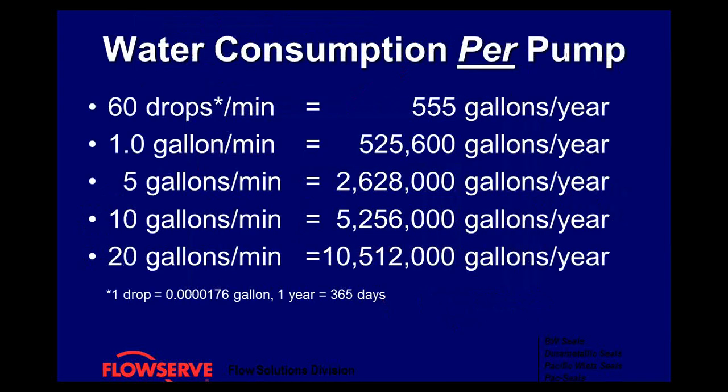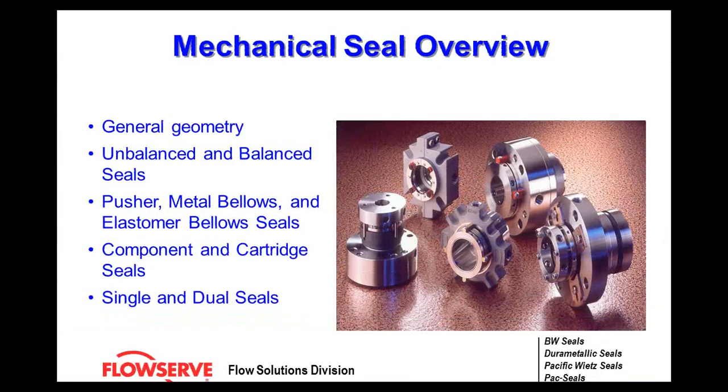Water consumption is something not always fully understood when using a packed system. One gallon per minute equals 525,600 gallons per year. If you have any packed systems at your plant, go out and find how much water in gallons per minute you're actually using, then check with accounts payable to see how much you're spending per year on city water. Packing may be inexpensive, but in the long run a mechanical seal might be the better option.